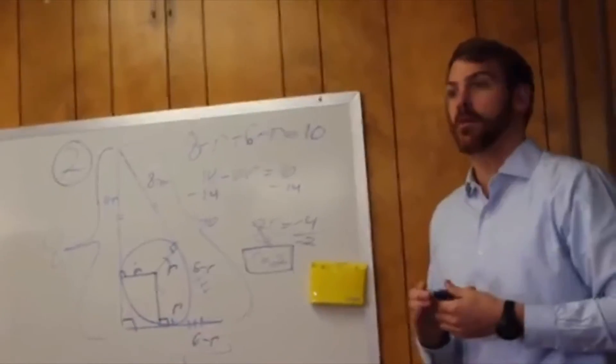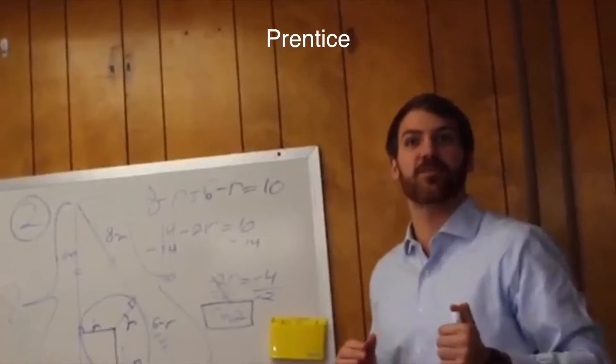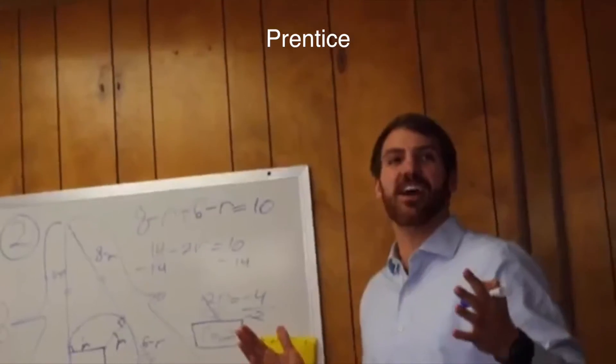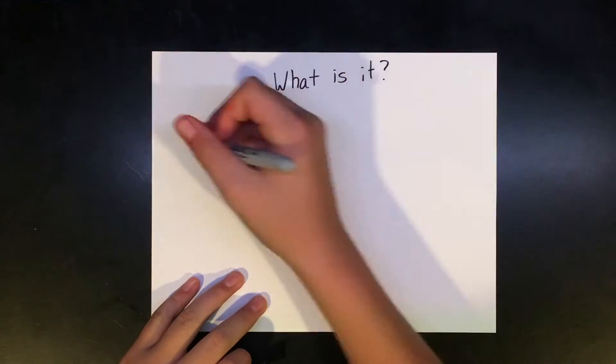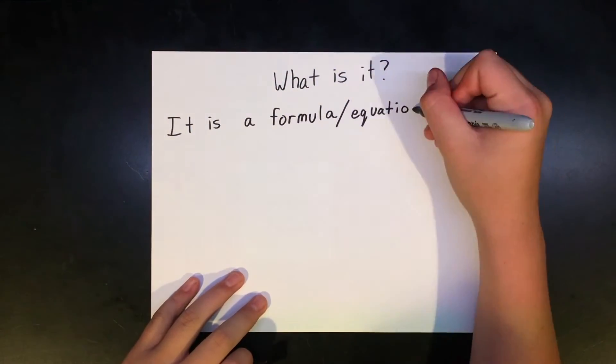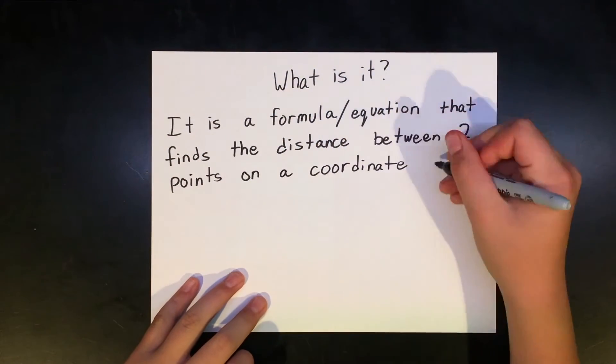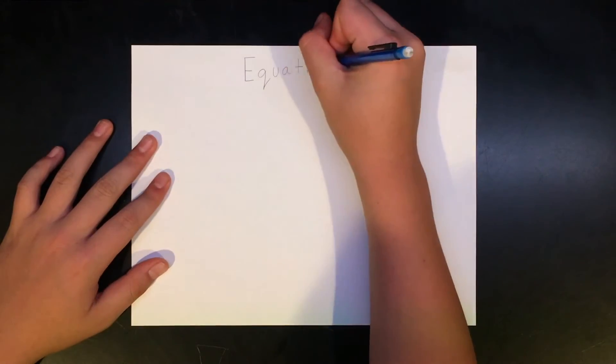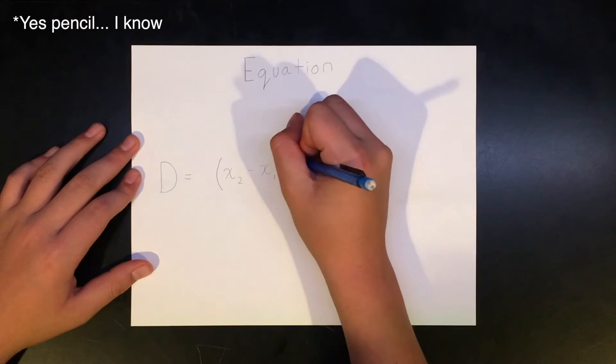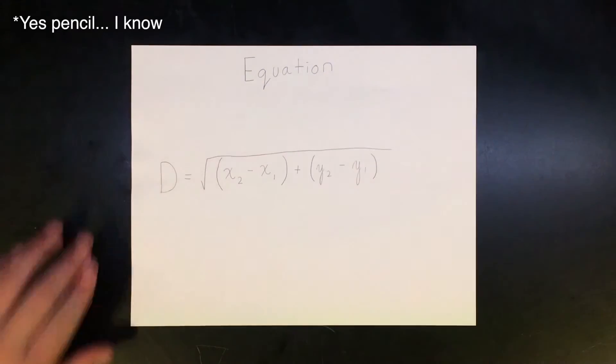The distance formula is a very self-explanatory concept. It is a formula or equation to find the distance between two points on a coordinate plane. This is done with the equation d equals the square root of the difference of x squared plus the difference of y squared.